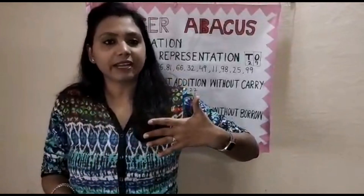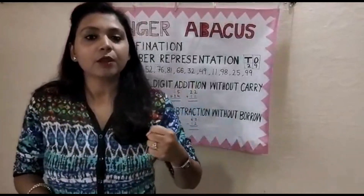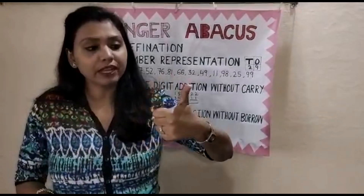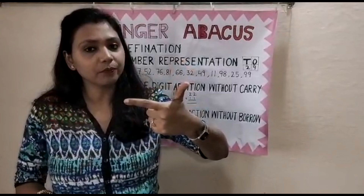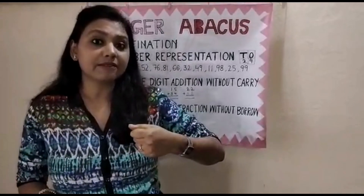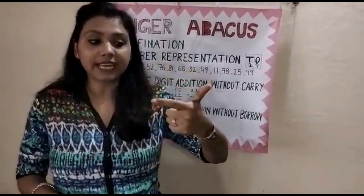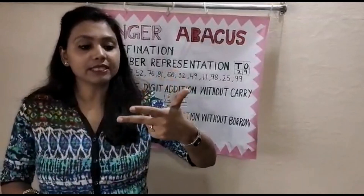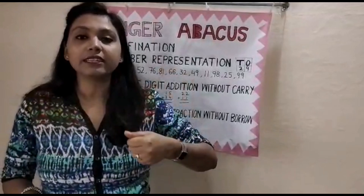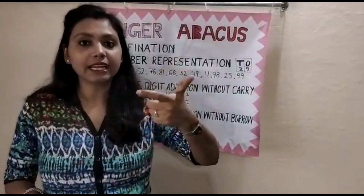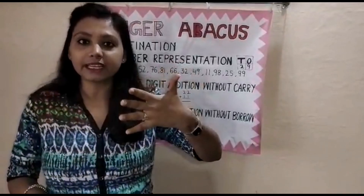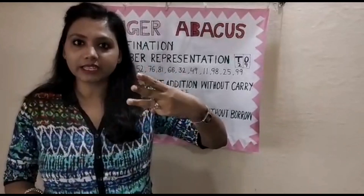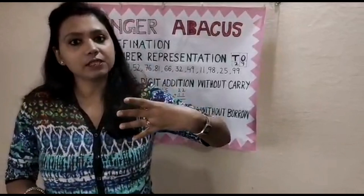Now come to the left hand, that is the 10's place. The thumb gives 50. If you want to represent 60, then 50 plus 10 equals 60. For 70, 50 plus 10 plus 10 equals 70. For 80, 50 plus 10 plus 10 plus 10 equals 80. For 90, 50 plus four fingers of 10 each equals 90. Similarly, 10, 20, 30, 40 are shown this way.